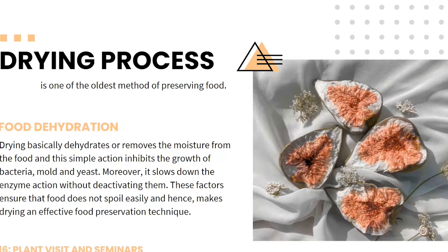So what is the drying process? It is said that drying process is one of the oldest methods of preserving food, also called dehydration. Drying basically removes the moisture from the food, and this simple action inhibits the growth of bacteria, mold, and yeast. Moreover, it slows down the enzyme action without reactivating them, ensuring that food does not spoil easily — making drying an effective food preservation technique. Another factor that helps with drying food is humidity, since drying involves removing moisture and low humidity will surely help the process.